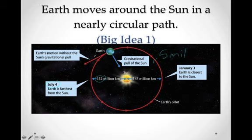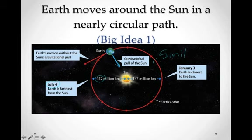Without gravity, Earth's motion would send it scurrying off into space. Luckily, there is an inward gravitational attraction towards the sun. We call that force gravity — it's just the attraction between the sun and the Earth. We talked about this earlier in the year when we discussed the formation of our solar system and the Earth and the moon.